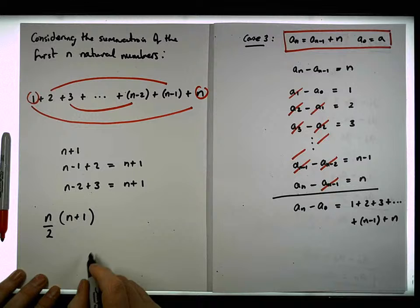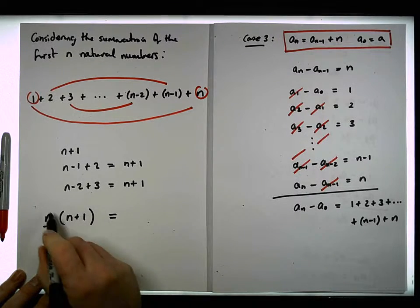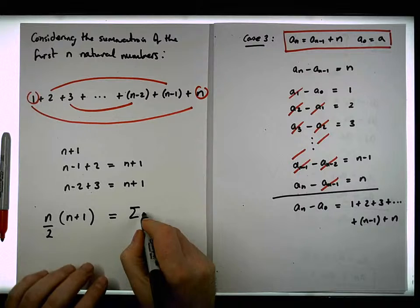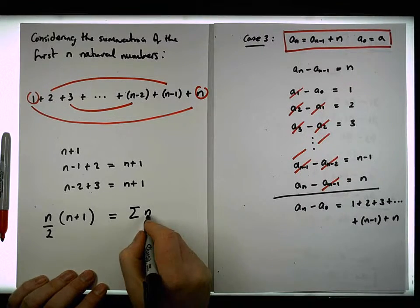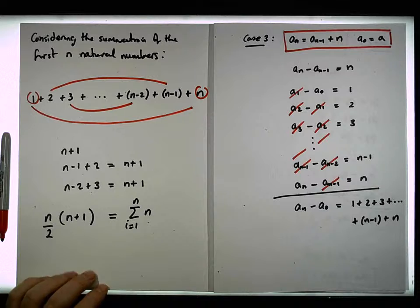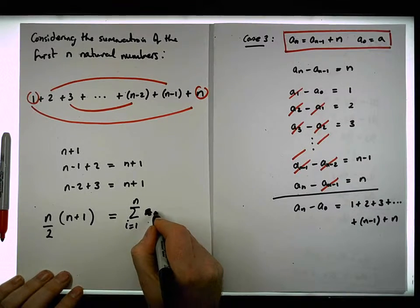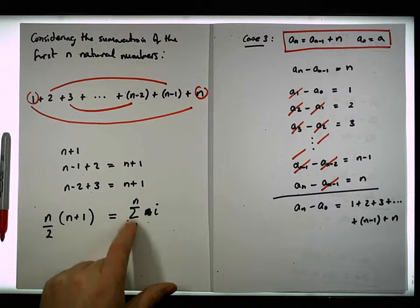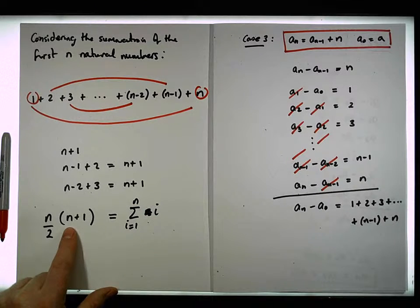So effectively what we end up with is that n over 2 times n plus 1 is equal to the sum of the natural numbers, where i is equal to 1 to n. Actually, what I should probably put here is sum of all the numbers from 1 to n is equal to this particular closed form here.